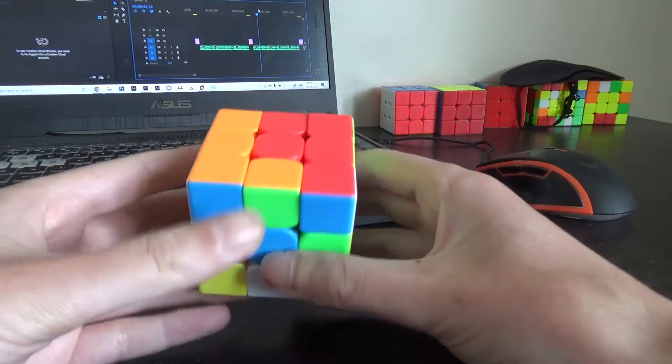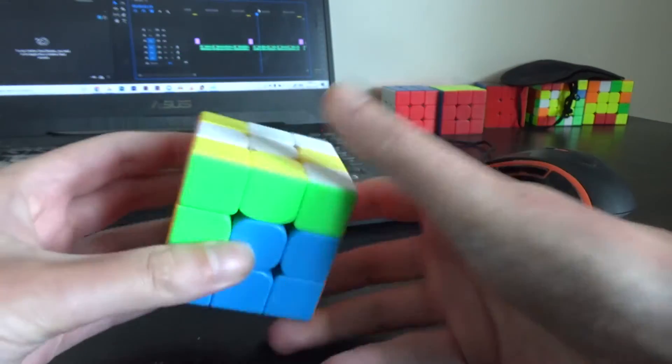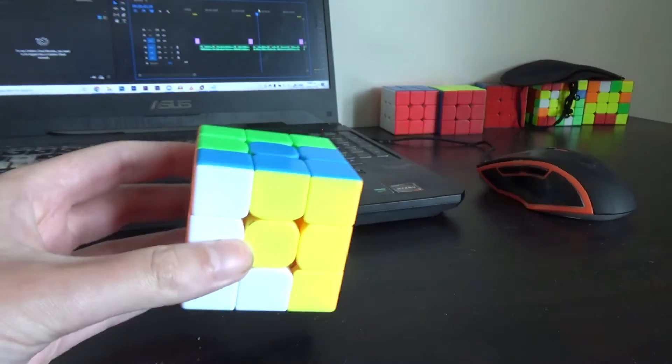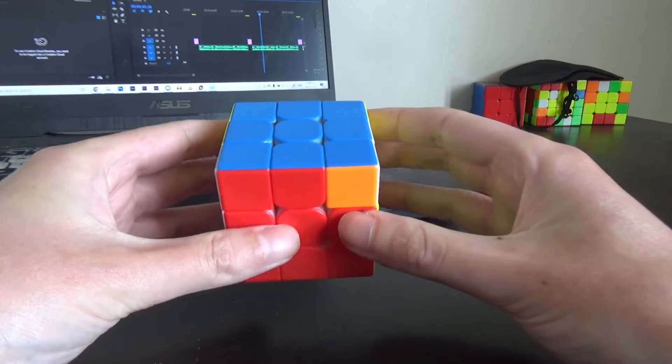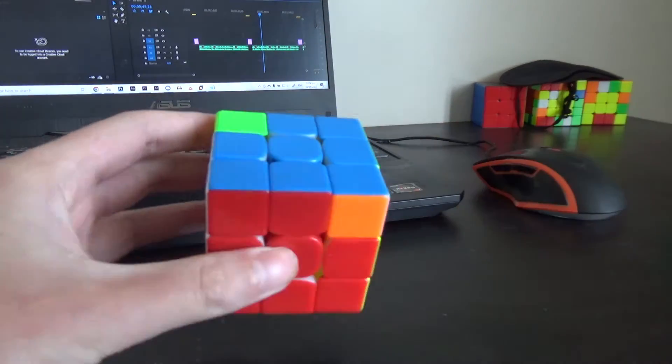To put it simply, you solve DR on another axis without breaking the first DR. Whichever one you solve, the third axis will automatically be solved as well. But there's more to it than that because you can get parity or fake HTR which is not solvable with half turns.